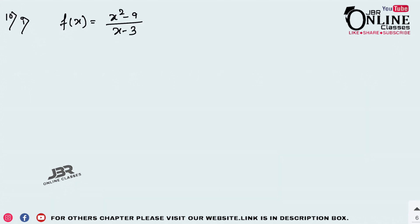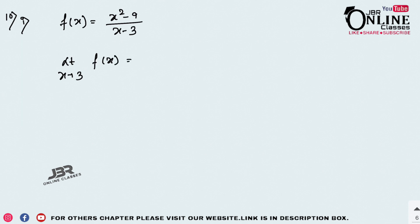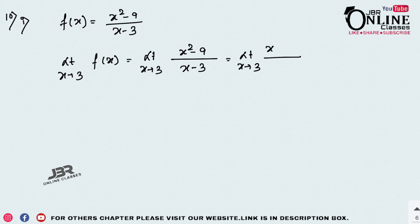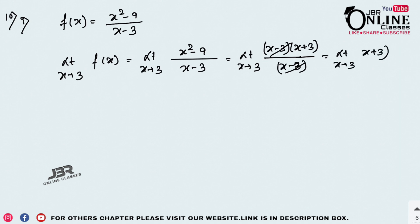Sum 10, part 1: f(x) = (x² - 9) / (x - 3) is not defined at x = 3. What value should be assigned to f(3) for continuity? The limit as x → 3 of (x² - 9)/(x - 3) — applying the difference of squares formula gives (x - 3)(x + 3)/(x - 3). Cancelling gives limit x + 3 = 6. So f(3) should be assigned 6.